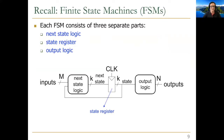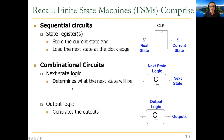Recall that we covered finite state machines in lecture six. A finite state machine consists of three parts: the next state logic that determines your next state, the state register — a D flip-flop — that stores your state, and the output logic. Sequential circuits form the state register and combinational circuits form the next state logic and output logic.